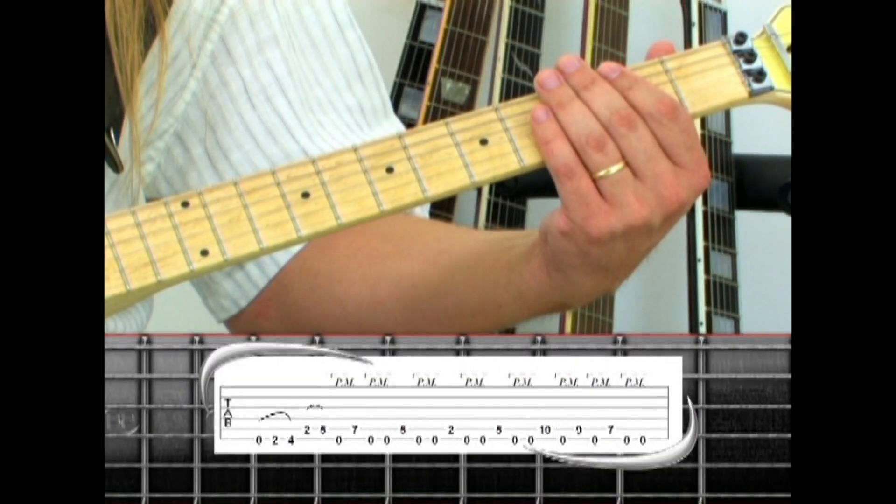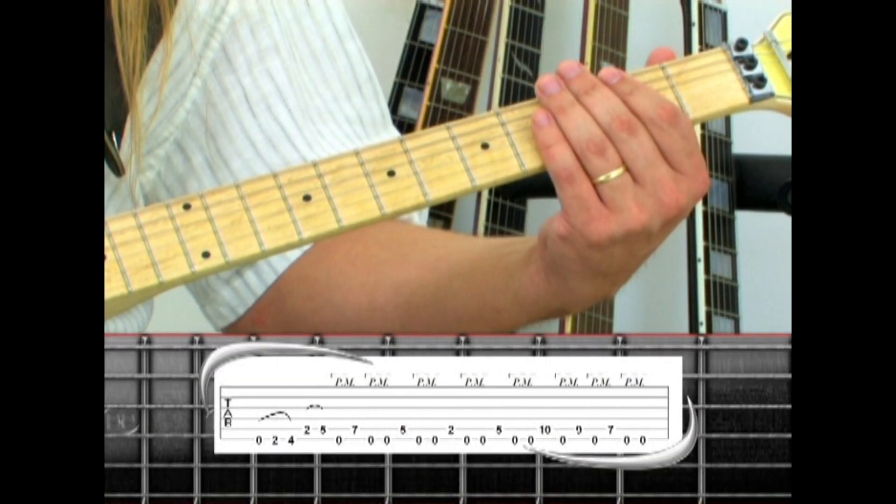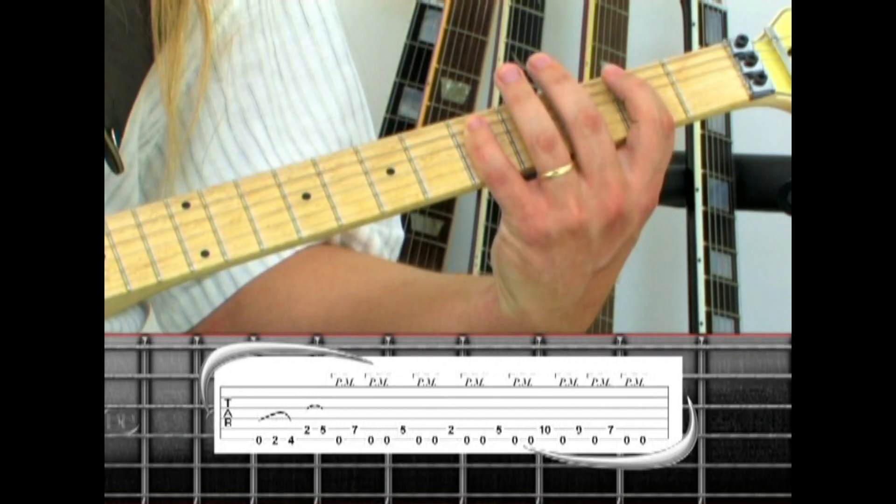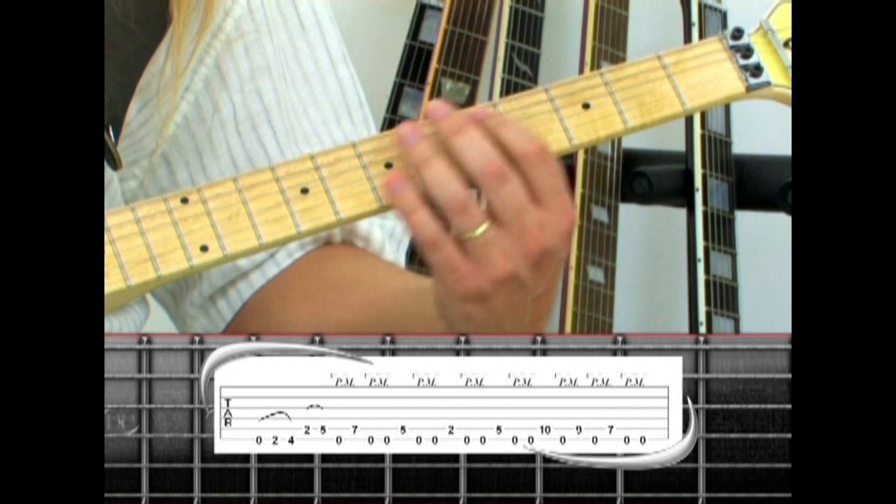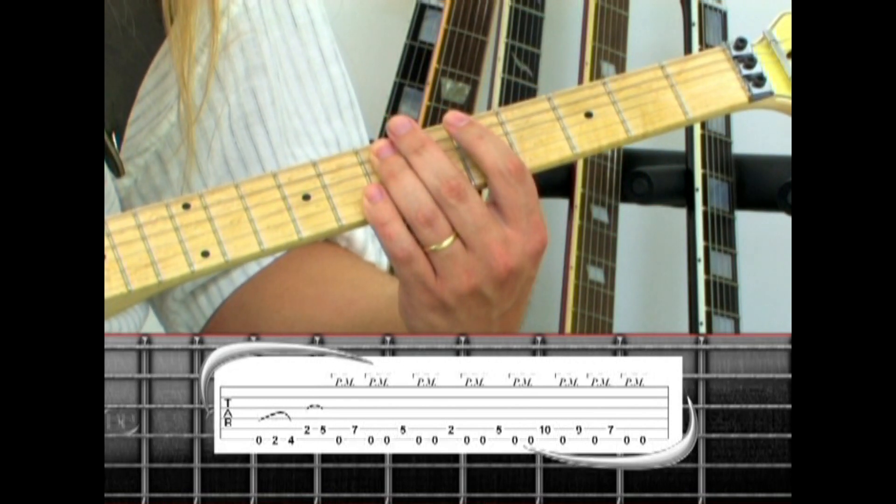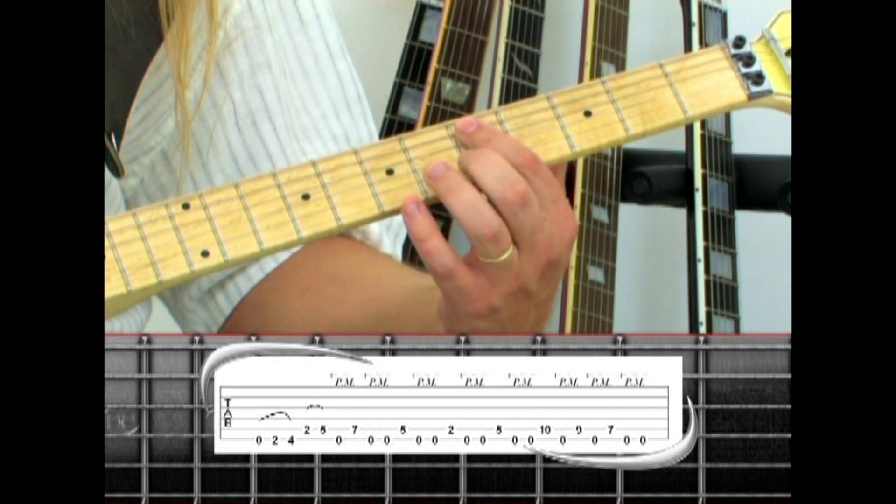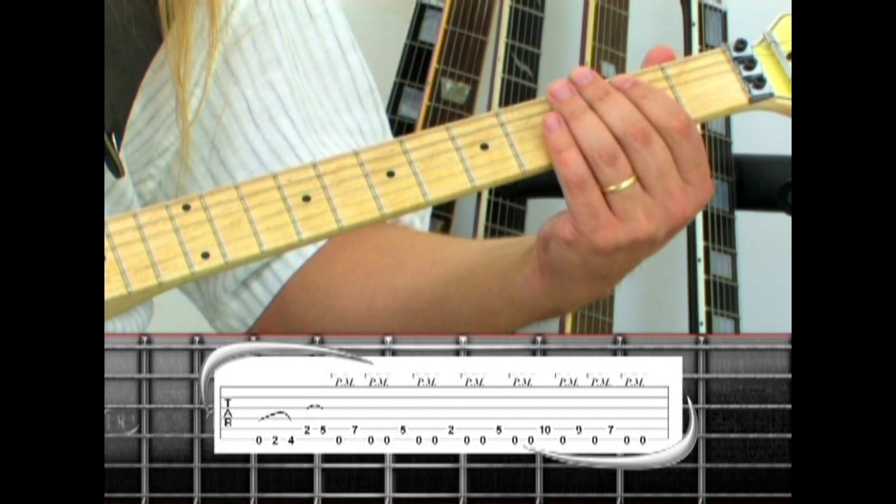In the second chorus, the guitar plays the same hammer-on riff, a pedal tone, then fifth string seven, two pedal tones, fifth string five, pedal tones down to two, pedal tones back to five.